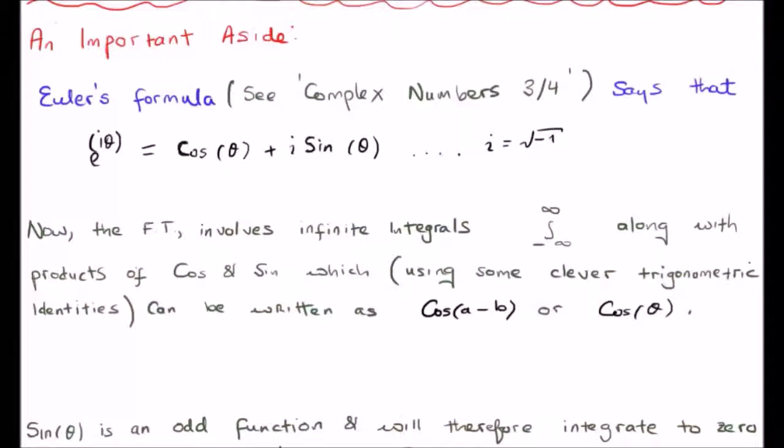Now, the Fourier transform integrals involve two particular things. The first one is infinite but even integrals. Of course, they go from minus infinity to positive infinity. And they also involve products and sums of cosines and sines.